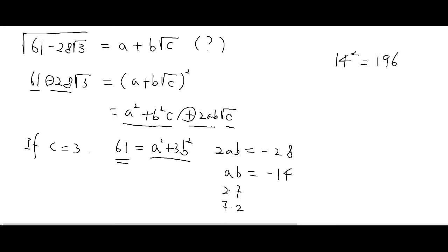Since this only equals 61, the case A = 14 is not possible — 14² is too large. So you try A = 7 and B = 2. Let's confirm: 7² is 49, plus 3 times 2² which is 4, giving 12. So 49 + 12 = 61. Yes, B = 2 works.